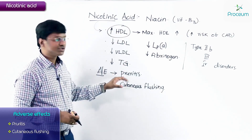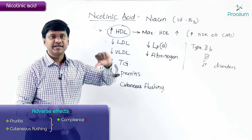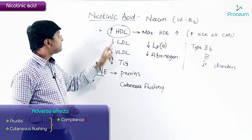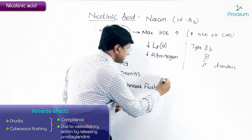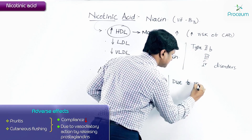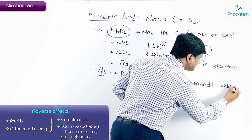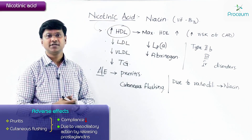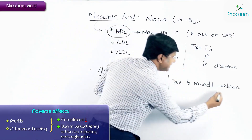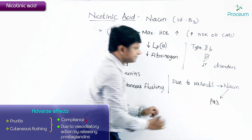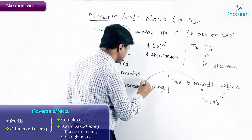Because of pruritus and cutaneous flushing, patient compliance with niacin is reduced. This occurs due to the vasodilatory action of niacin. The vasodilatation is caused because niacin releases prostaglandins, which cause this vasodilatory action, leading to cutaneous flushing.